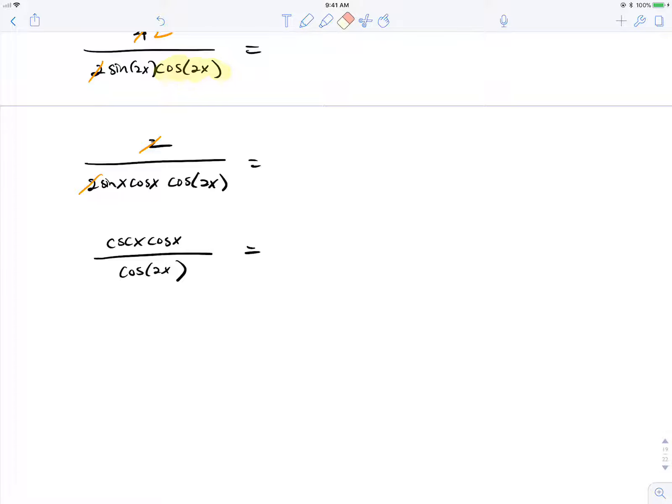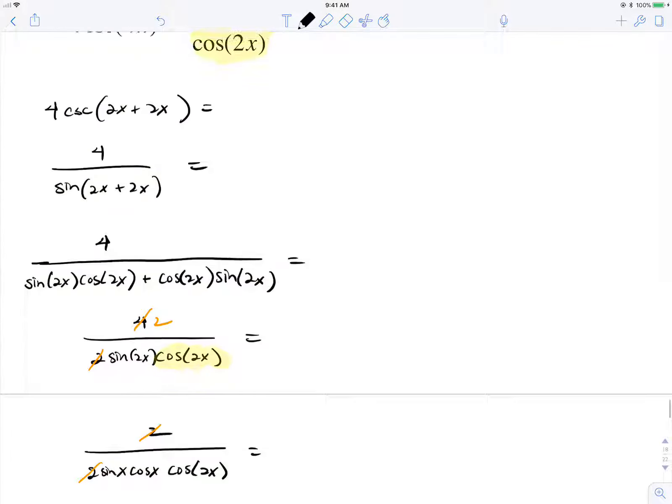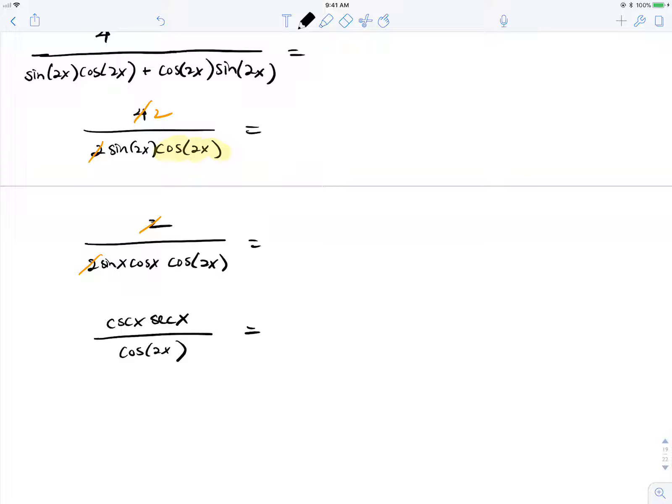So this is cosecant x, secant x over cosine of 2x. Which is the identity. Just written. That's the identity.